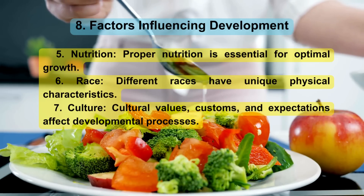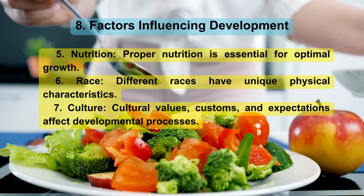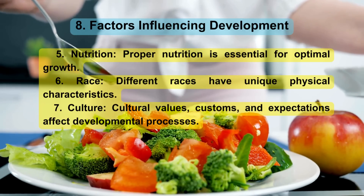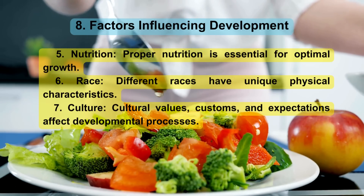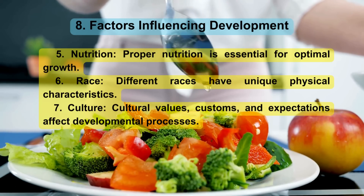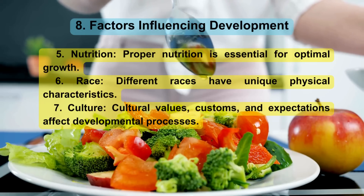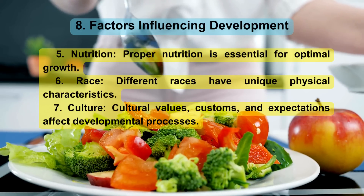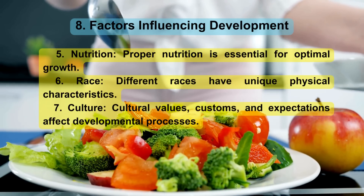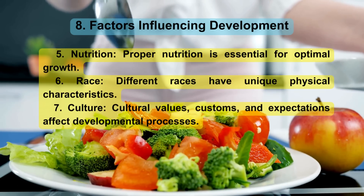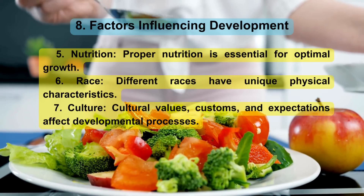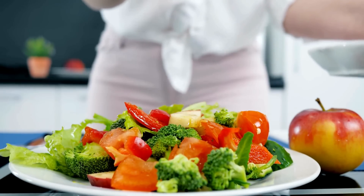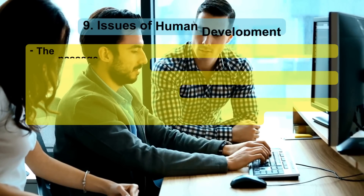Sixth, race — different races have unique physical characteristics. Seventh, culture — cultural values and expectations affect developmental processes.